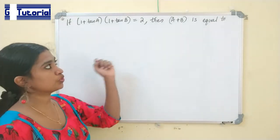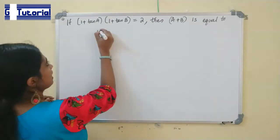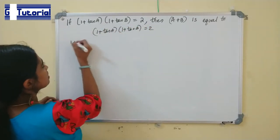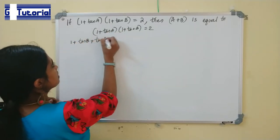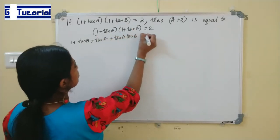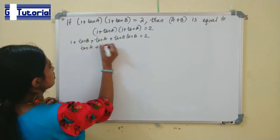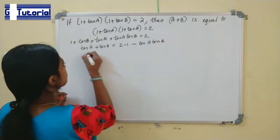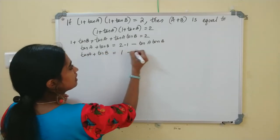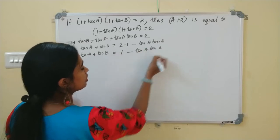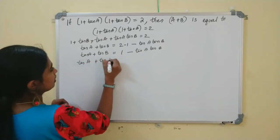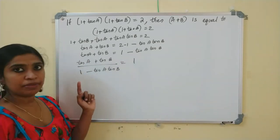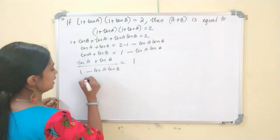Next question: if (1 + tanA)(1 + tanB) = 2, find the value of A + B. Expanding the left side: 1 + tanB + tanA + tanA·tanB = 2. Rearranging: tanA + tanB = 1 - tanA·tanB. Dividing both sides: (tanA + tanB)/(1 - tanA·tanB) = 1. This expression is the expansion of tan(A + B).